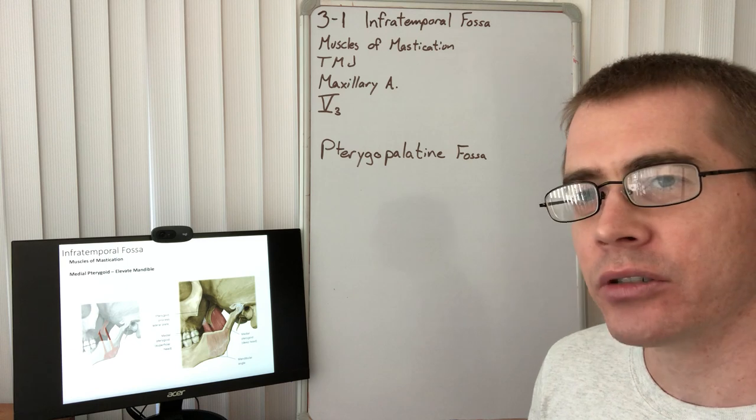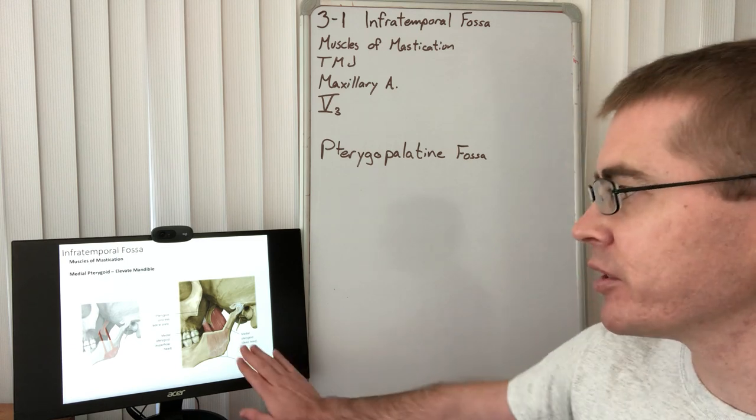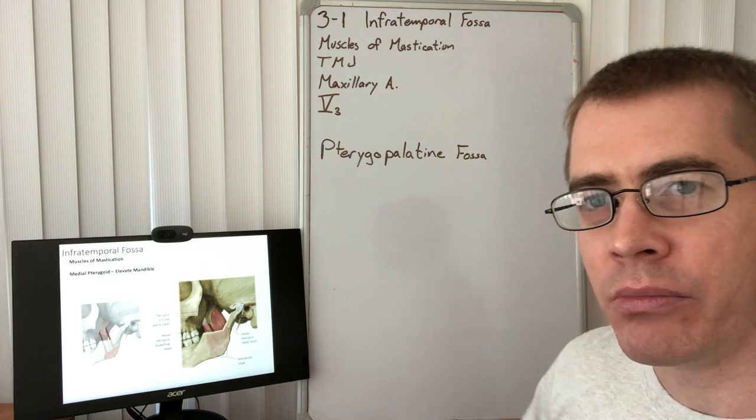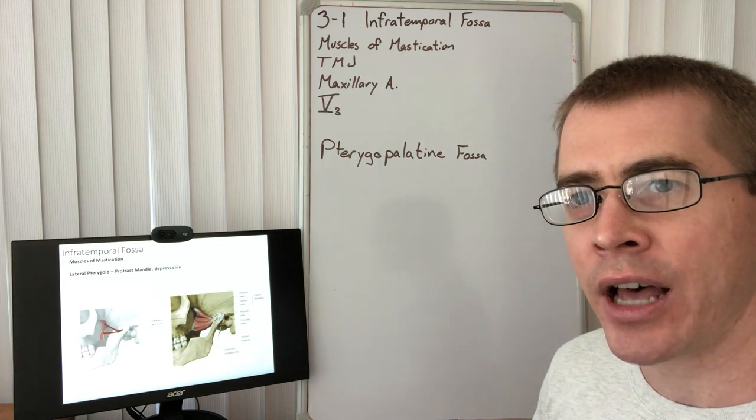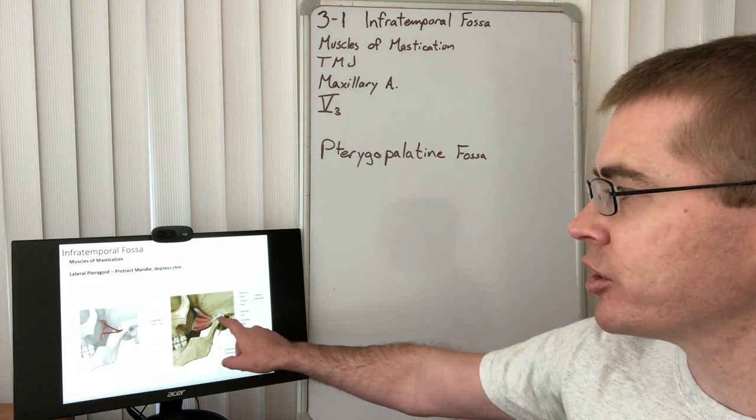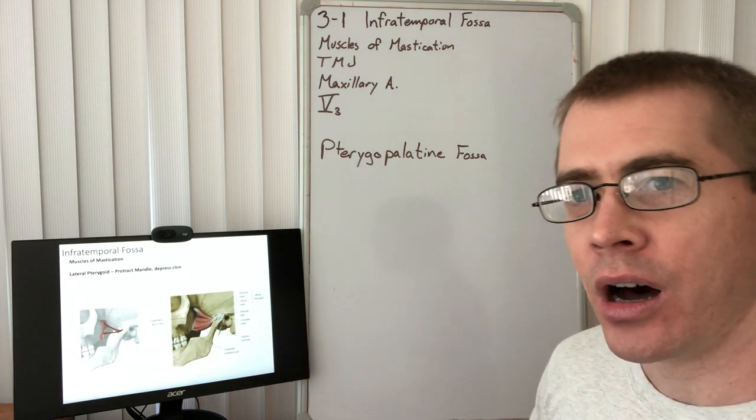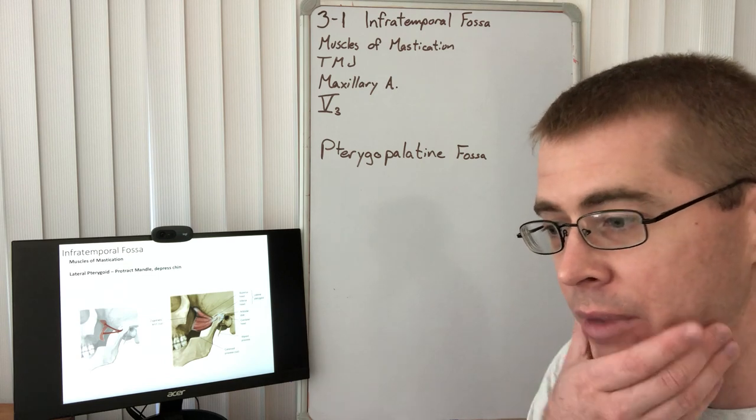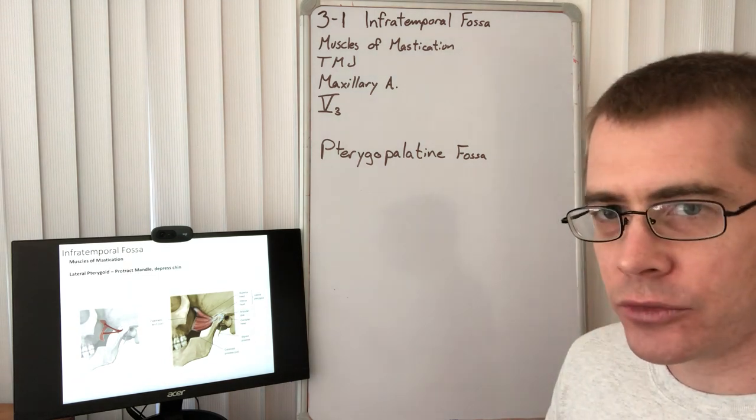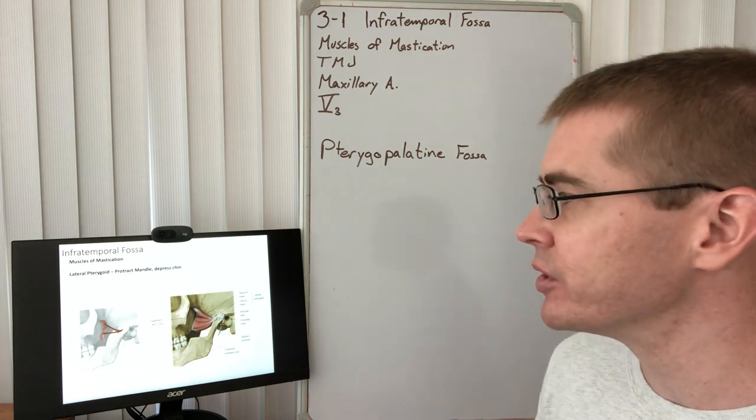Make note that the medial pterygoid muscle has a very similar directionality to the masseter muscle, whereas the lateral pterygoid is attaching to the condyle of the mandible. Just note those quick differences there.